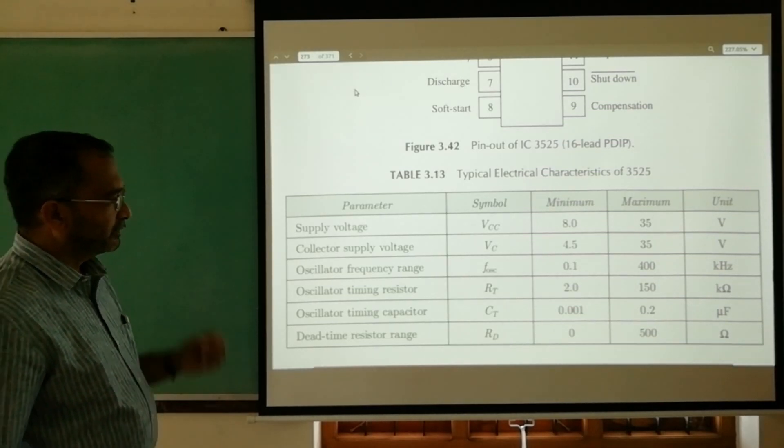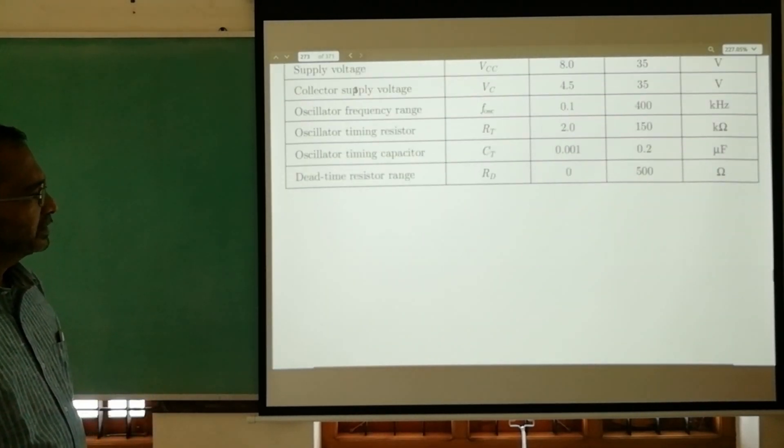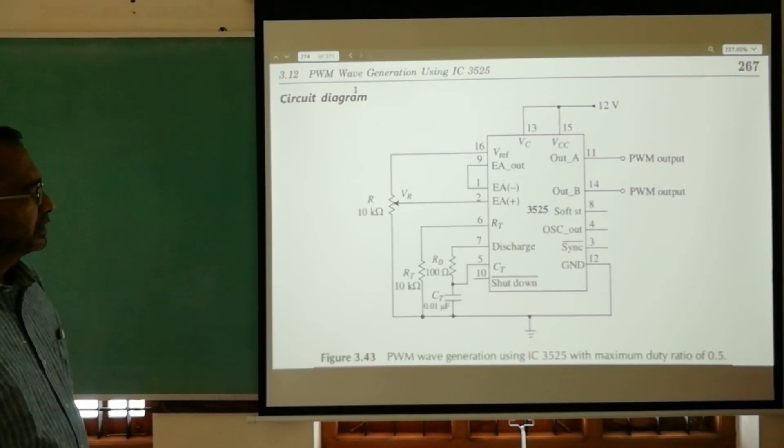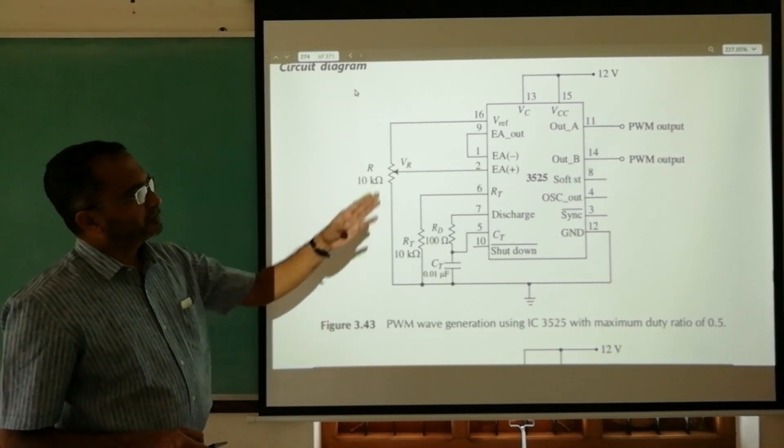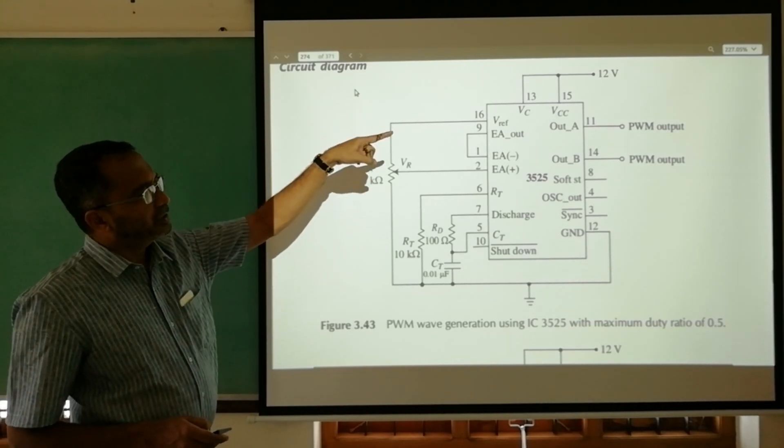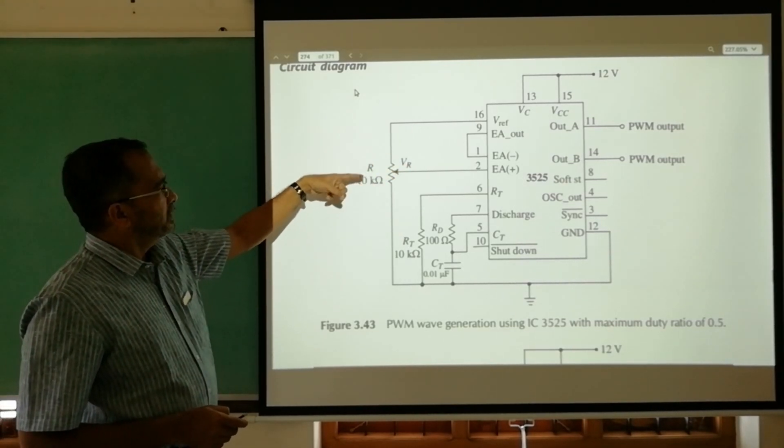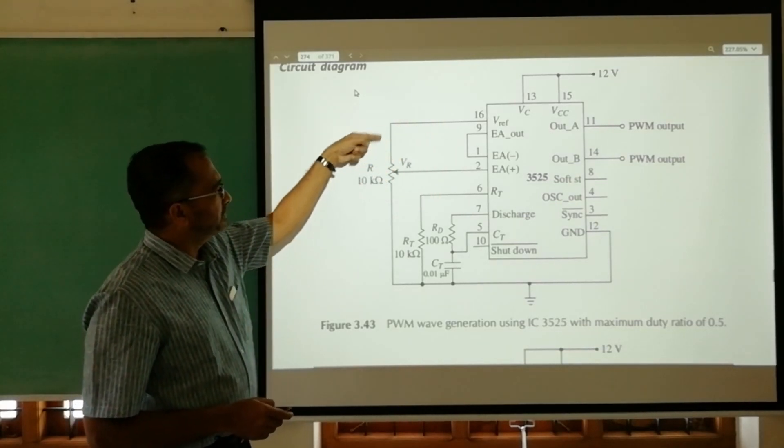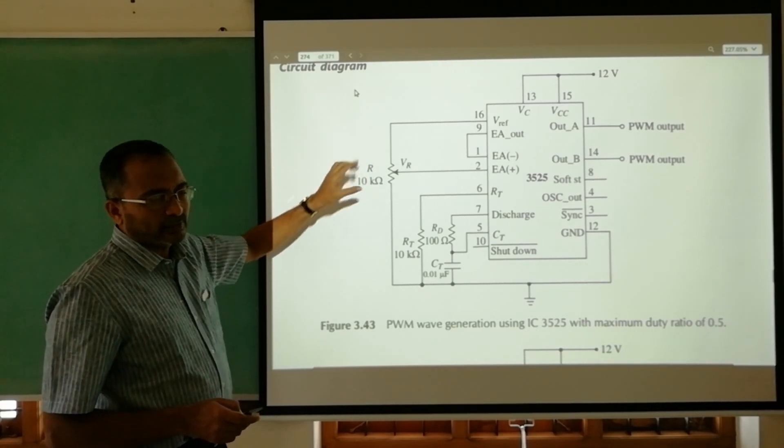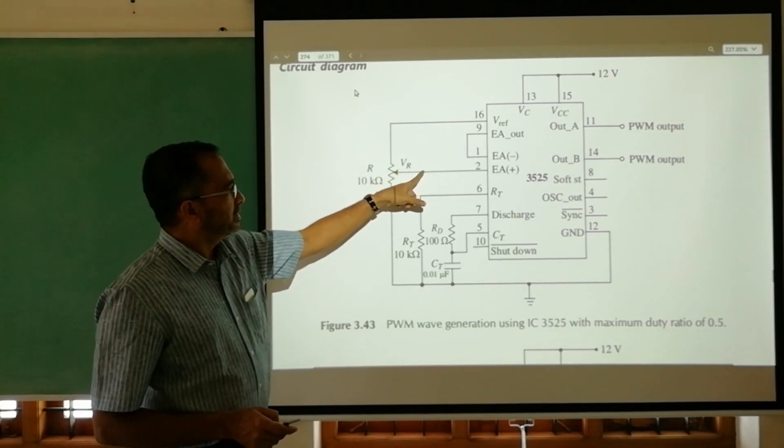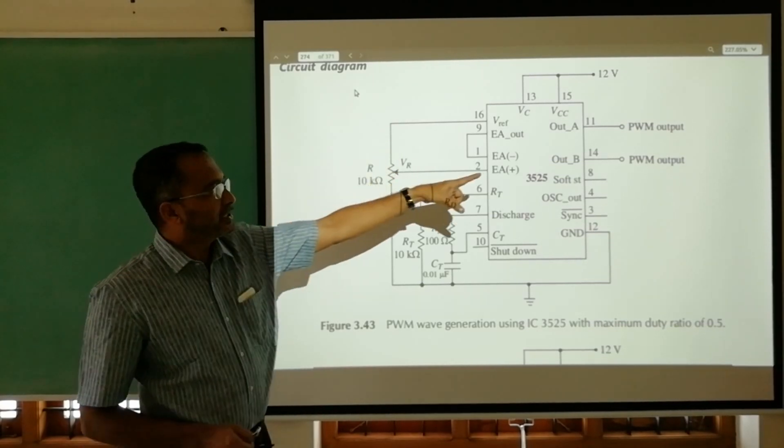The circuit diagram is actually in this manner. This is the PWM waveform generator using IC 3525. Ultimately we get two complementary output waveforms. When pin number 11 has got a high output, 14 will have low output, or vice versa. This particular voltage 5.1V is given across this potentiometer. Here we have to use a linear potentiometer, not a volume controlled logarithmic. It should be a linear wire bound potentiometer. By varying this, we can adjust the duty cycle of waveforms available at pin number 11 and 14.